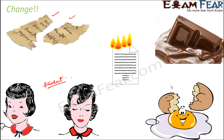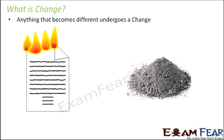You have an egg and you prepare an omelet. The spherical egg is gone — it has changed into an omelet with a different shape, different composition, and different taste. So what is change? Change is anything that becomes different. Anything that looks different has undergone a change. The torn pieces look different from the original paper; the ashes are different from the paper — so anything which becomes different is a change.